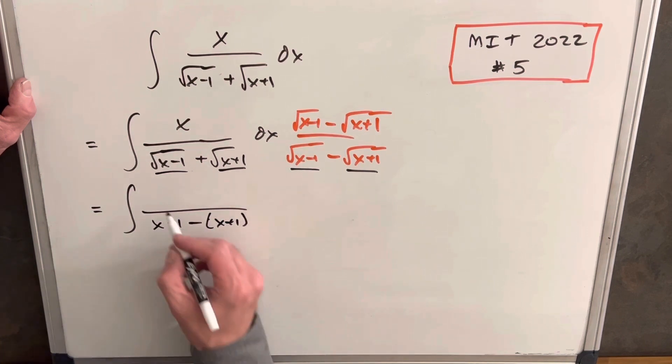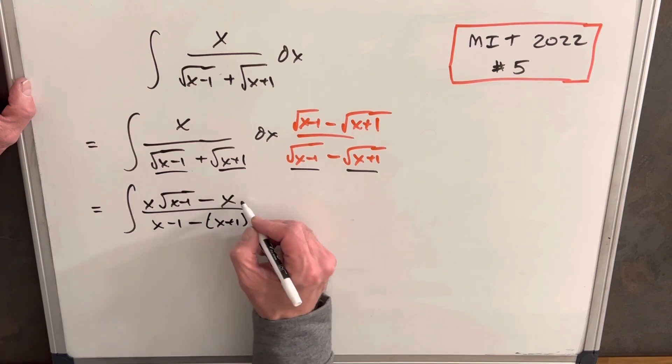And then in the numerator, we're going to have x times the square root of x minus 1. I'm going to distribute the x. And then we're going to have x times the square root of x plus 1 dx.